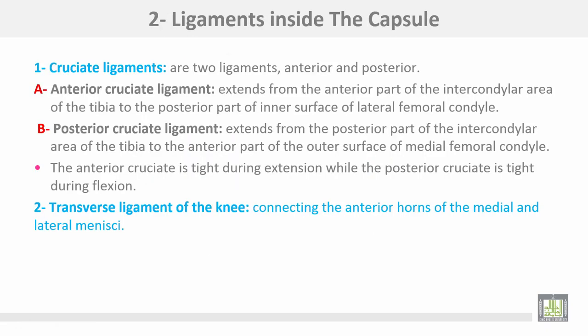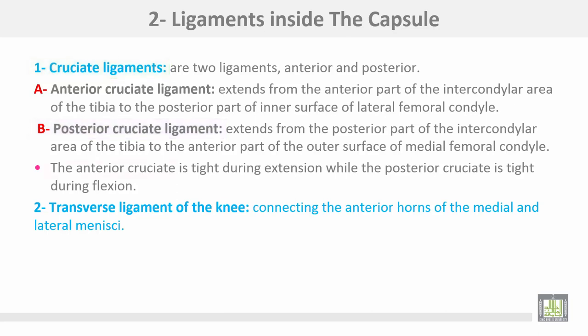The ligaments inside the capsule are the cruciate ligaments — two ligaments, anterior and posterior. The anterior cruciate ligament extends from the anterior part of the intercondylar area of the tibia to the posterior part of the inner surface of the lateral condyle of the femur. The posterior cruciate ligament extends from the posterior part of the intercondylar area of the tibia to the anterior part of the outer surface of the medial condyle of the femur. The anterior cruciate is tight during extension while the posterior cruciate is tight during flexion.